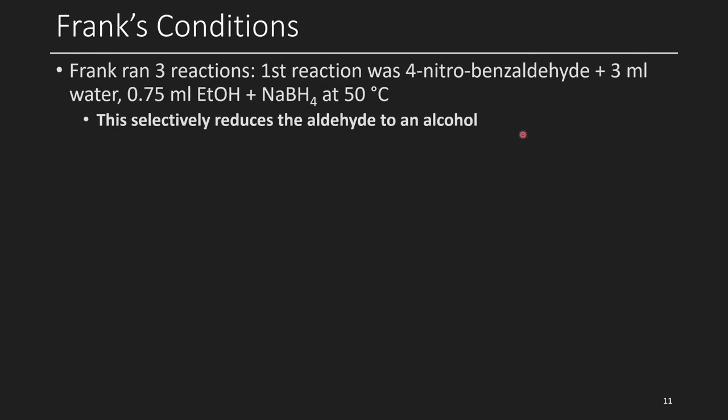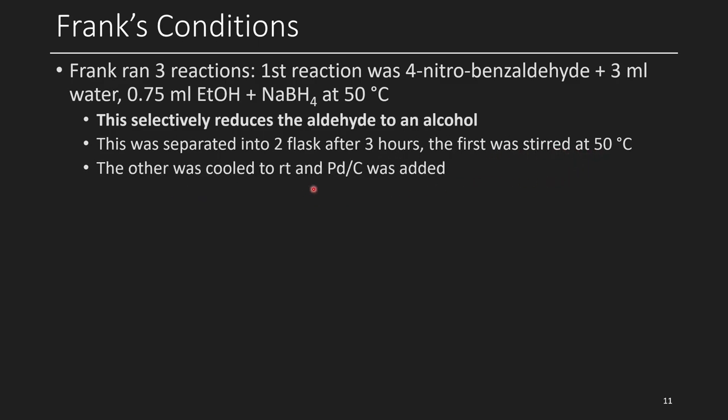These were the conditions that Frank used. Frank ran three reactions. The first reaction was with 4-nitrobenzaldehyde with 3 ml water, 0.75 ml EtOH, and NaBH4 at 50°C. This reaction, because it doesn't have any other catalyst, will only reduce the aldehyde to an alcohol. In the paper, they used an alcohol, and to verify that this worked, Frank had to prepare the alcohol as a standard. This alcohol, once it was formed, the crude solution with additional sodium borohydride was transferred into two flasks after three hours. The first one was stirred at 50°C, and the other one was cooled to room temperature, and Pd/C was added.